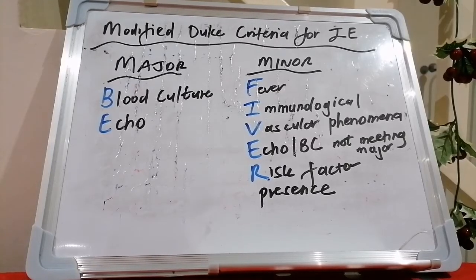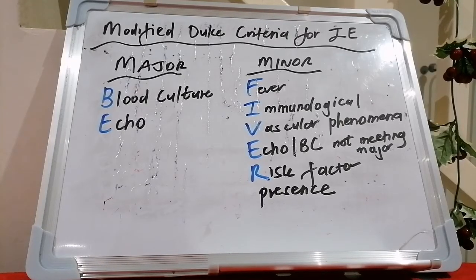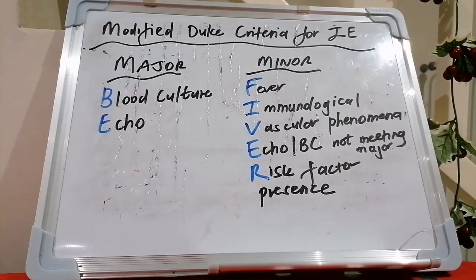In the case of early prosthetic valve endocarditis, we use vancomycin with gentamicin and rifampicin for four to six weeks.